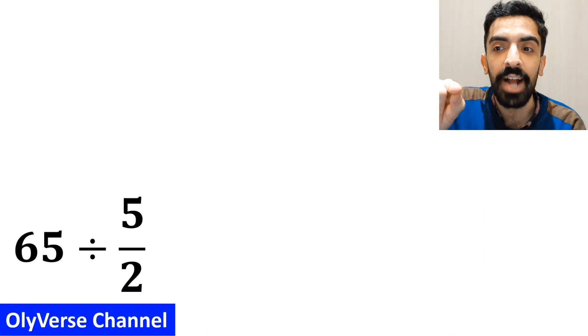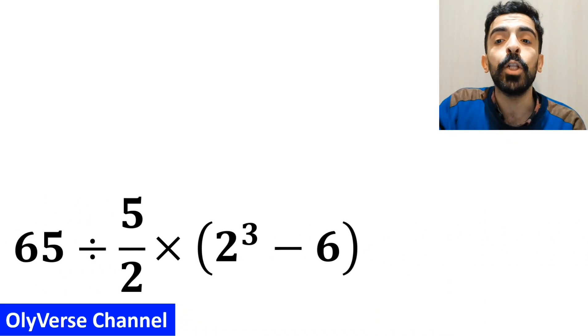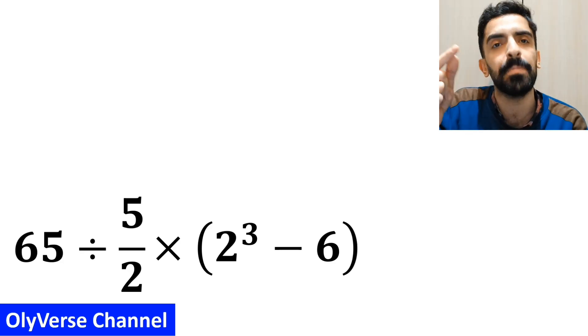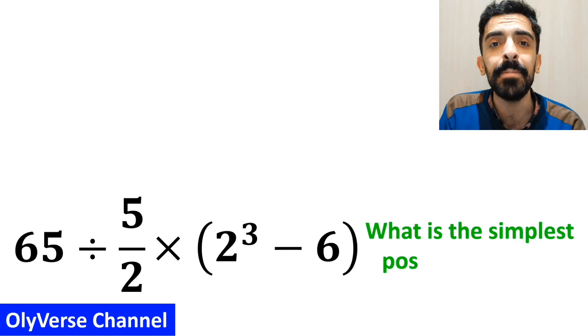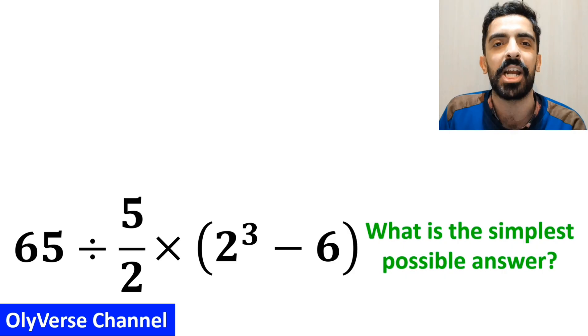If we have the expression 65 divided by 5 over 2 multiplied by open parenthesis 2 to the power of 3 minus 6 close parenthesis, then what is the simplest possible answer to this question?